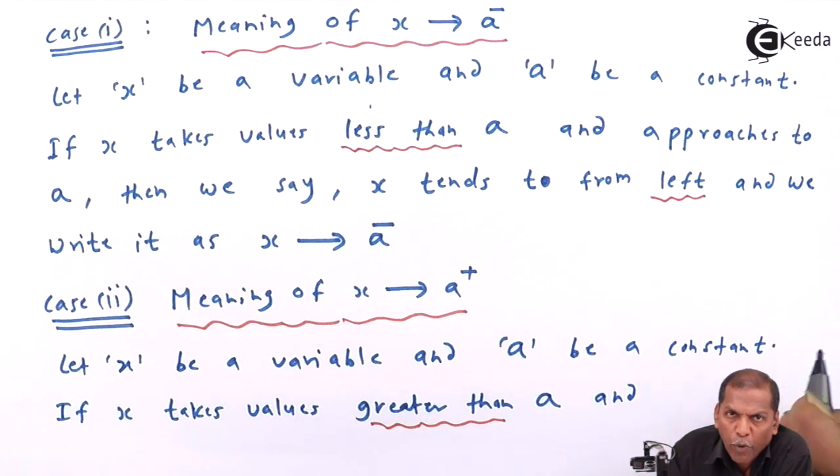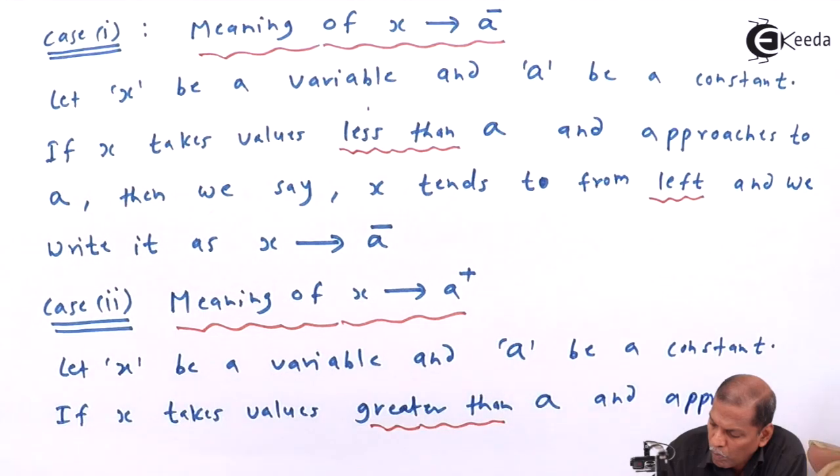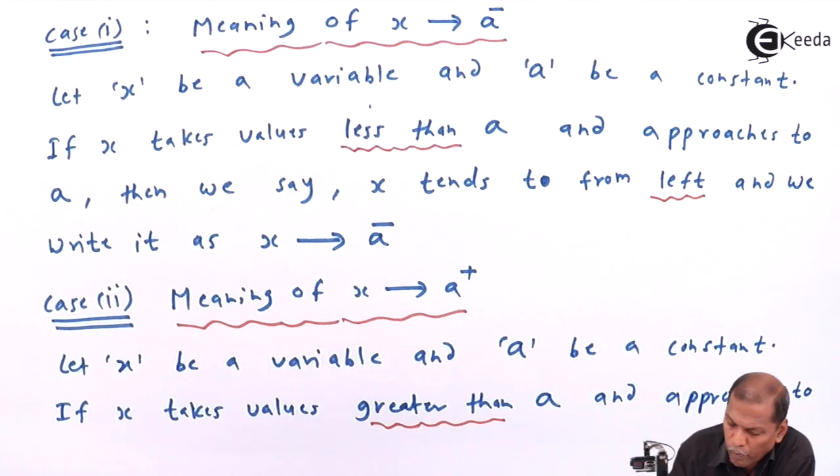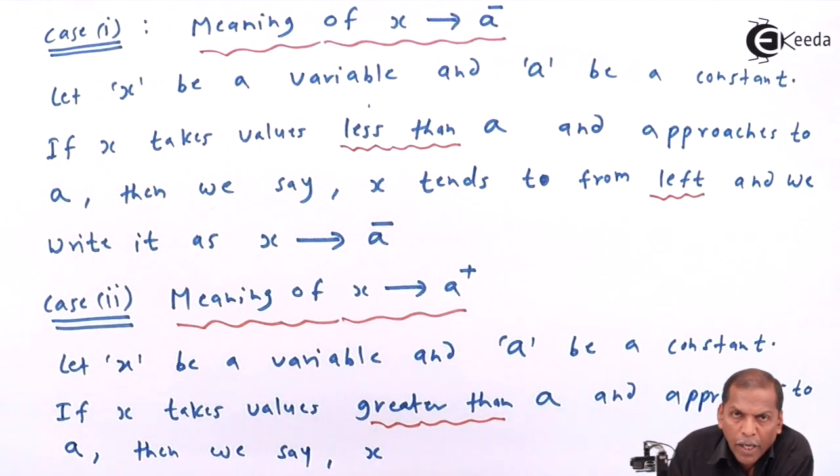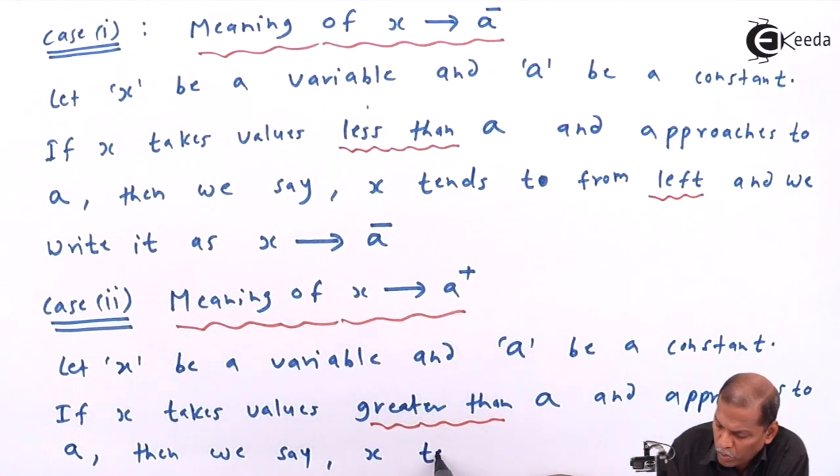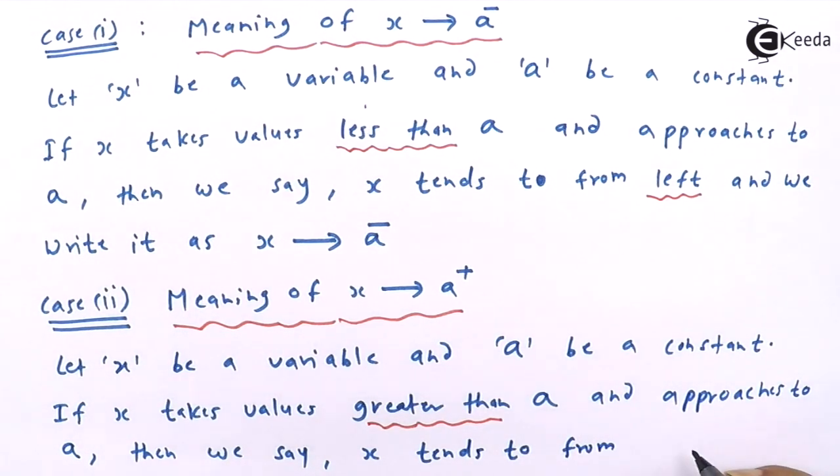and approaches to a, then we say x tends to a from right.